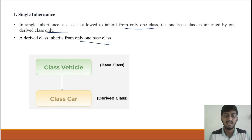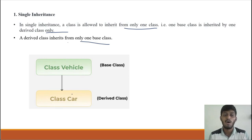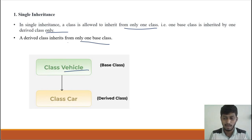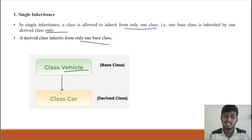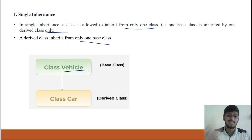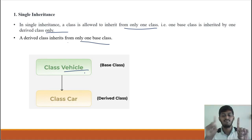Here, class vehicle is a base class and class car is a derived class. So class car will access the properties and characteristics of vehicles — the member functions and data members will be inherited by car. We know that class car has only one base class and it is inherited from vehicle. This is single inheritance — the derived class is derived from only one base class.